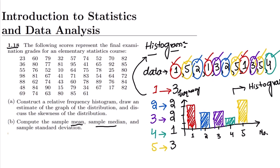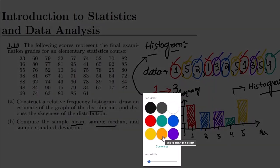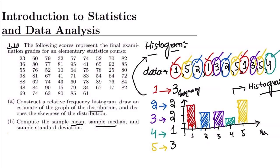That is what the histogram is — a very useful plot that shows the frequency of occurrence of different elements. This is also called a discrete distribution or discrete frequency distribution. To see the estimate of the graph of the distribution, I draw a smooth curve over the histogram bars. We will discuss skewness in more detail in our upcoming lecture, but skewness is when data is tilted or concentrated toward one side of the distribution.